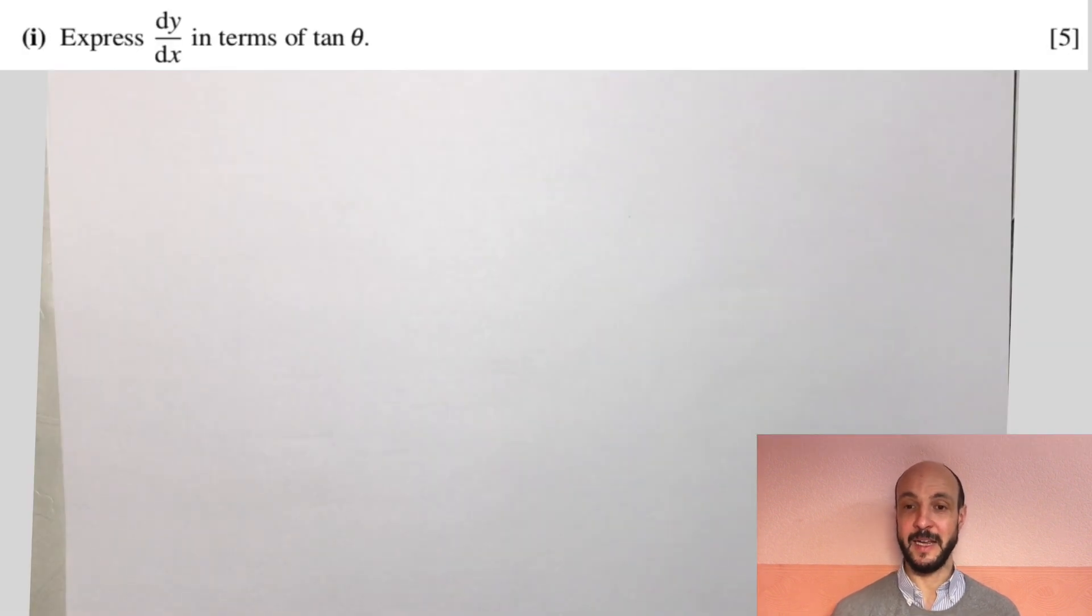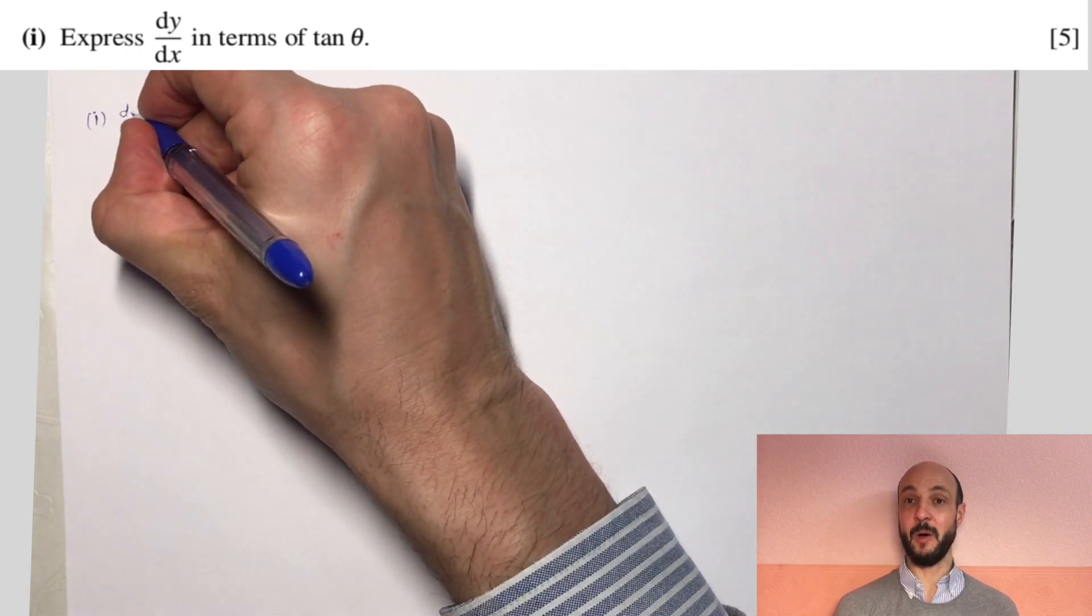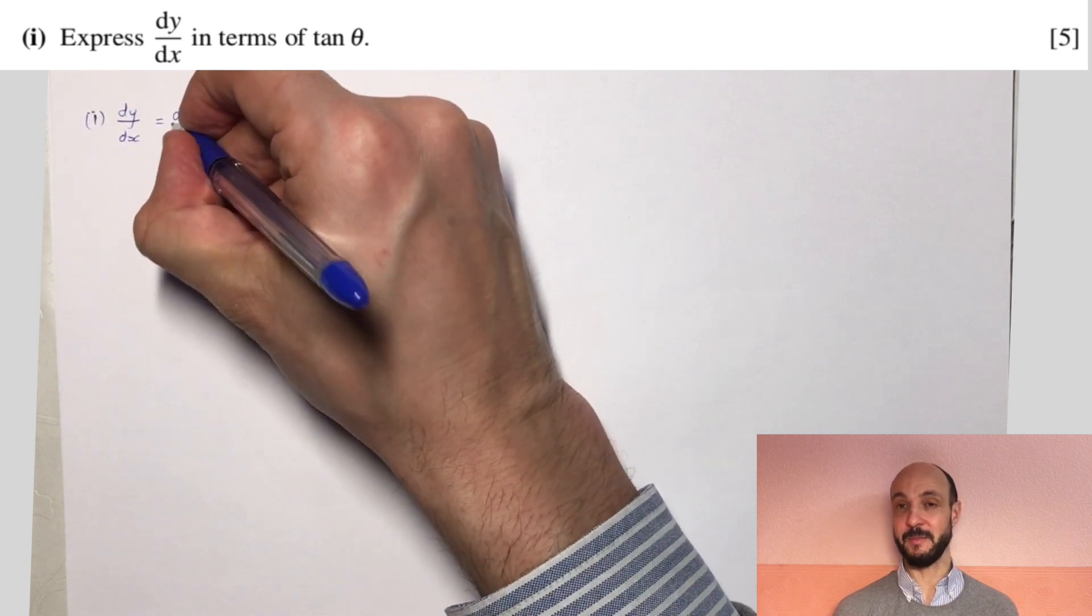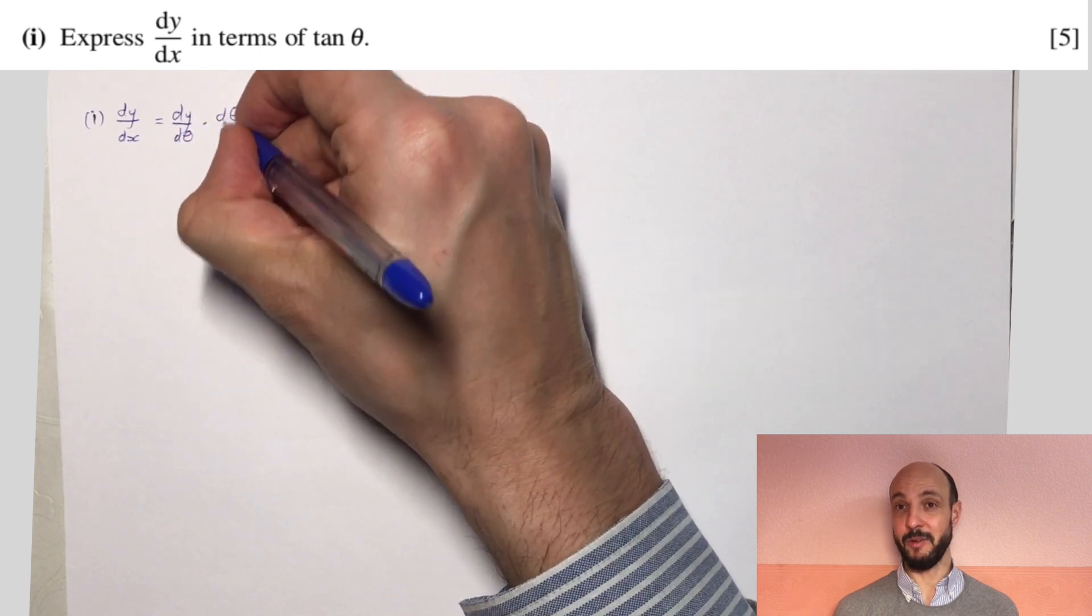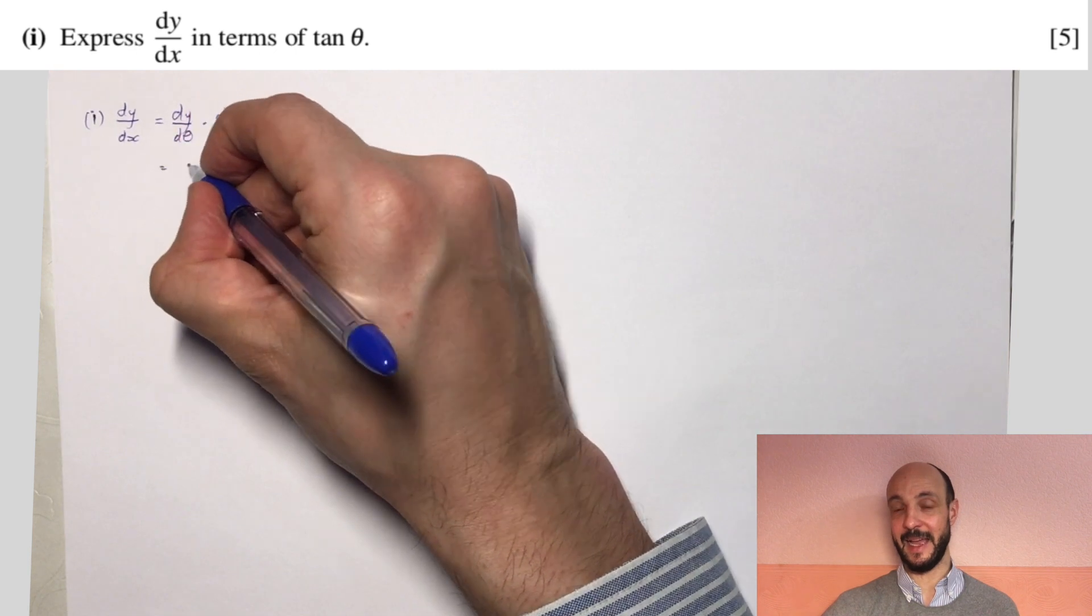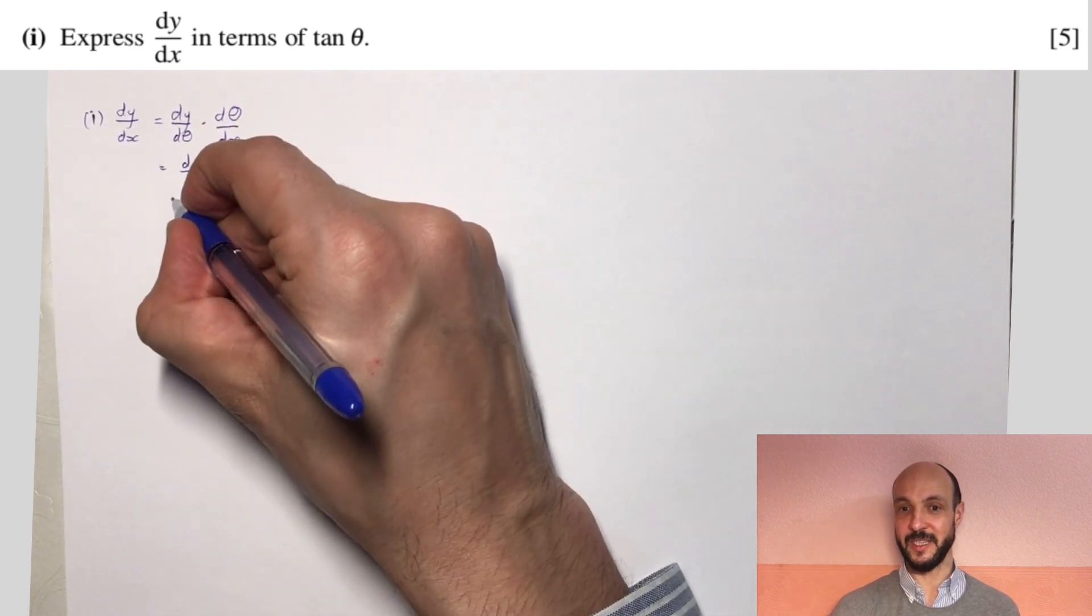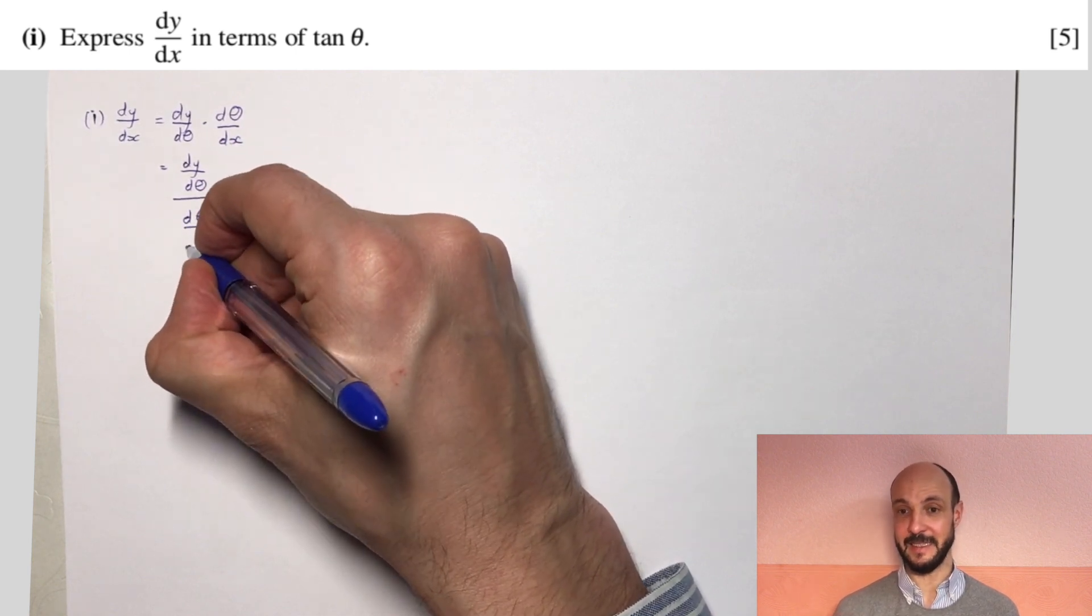OK, so for part 1, to find dy/dx when we've got parametric equations, we need to use the fact that dy/dx is equal to dy/dθ times by dθ/dx. And we can rewrite that, instead of timesing by dθ/dx, we divide by dx/dθ. So we've got dy/dx is equal to dy/dθ divided by dx/dθ.